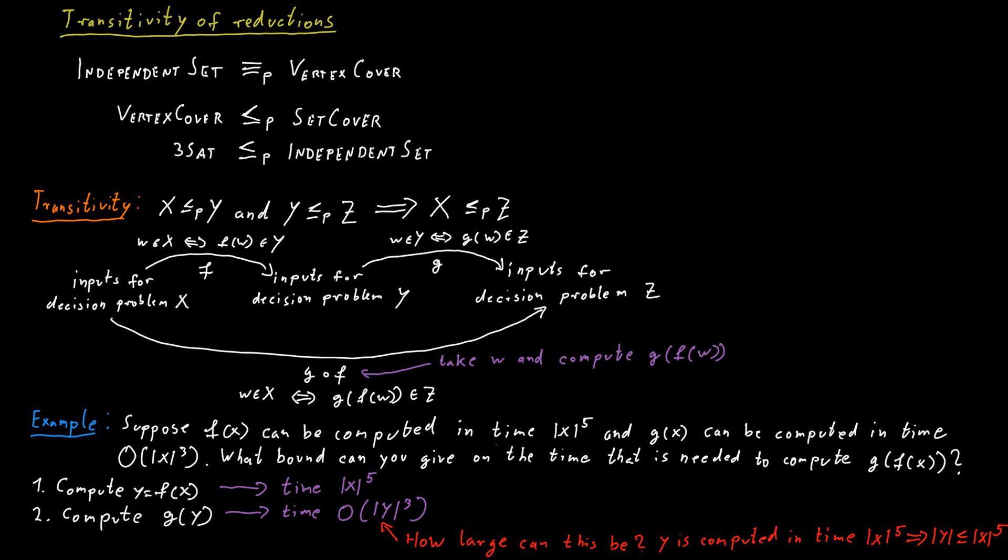So therefore, what does it take to compute g of Y? Well, Y now is, as far as we know, could be as big as X to the power of five. And then we need to take that to the power of three. So the total time required here is the first step, X to the power of five, plus order of size of X to the power of five to the power of three. And this is in the order of size of X to the power of 15.